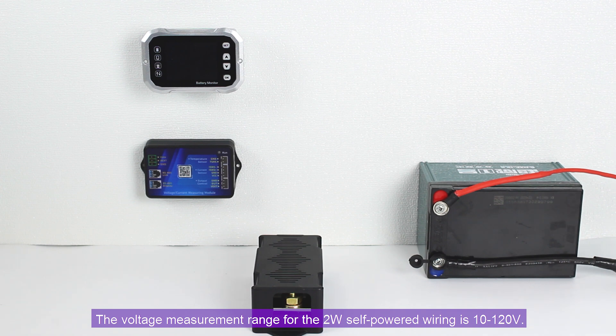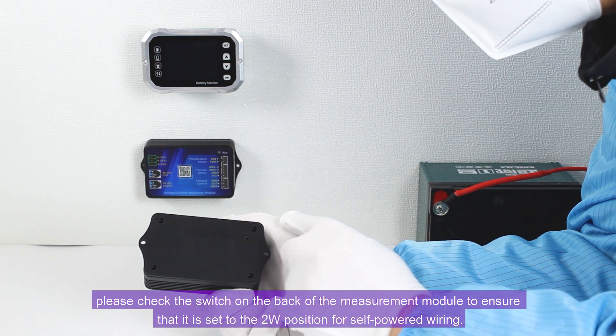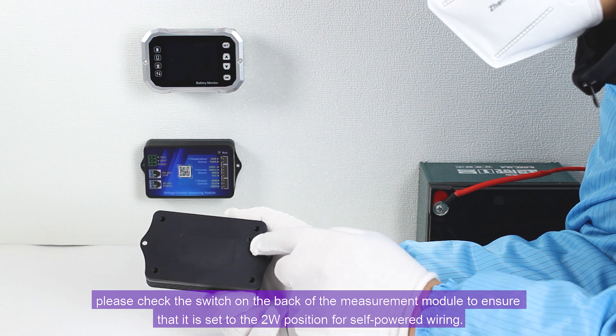The voltage measurement range for the 2W self-powered wiring is 10 to 120 volts. Before wiring, please check the switch on the back of the measurement module to ensure that it is set to the 2W position for self-powered wiring.